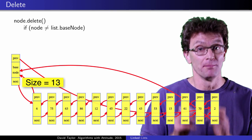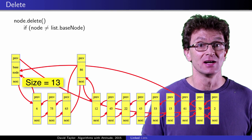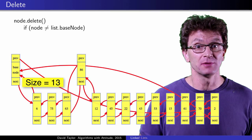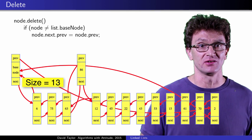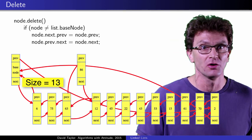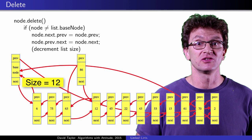Again, imagine that we are magically given a node reference, 86 here, and we want to delete that node from the list. Take the nodes surrounding the condemned node, and stitch them together. Here, make 86's next node point to 86's previous node, and 86's previous node point to 86's next node. Decrement the size of the list, and you are done.